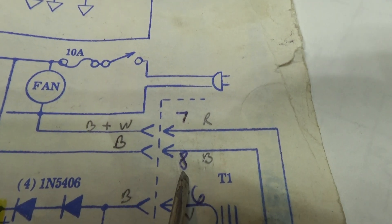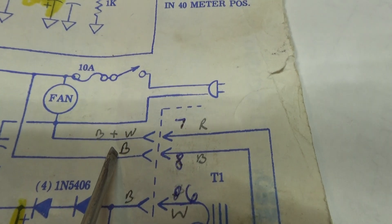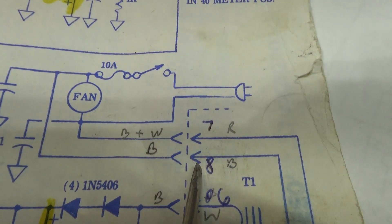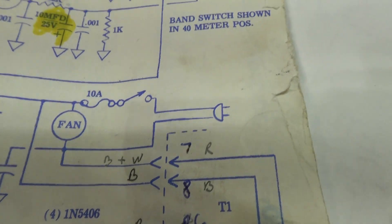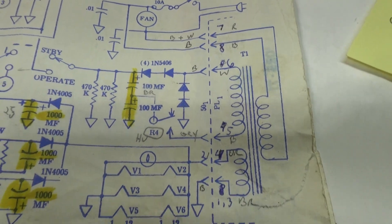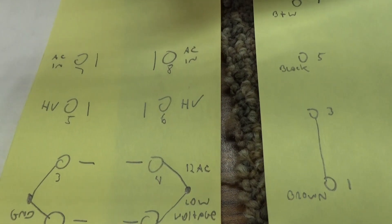And going up to pin six, that's the other leg of the high voltage. And in pin seven or eight is the AC coming in, coming from the chassis going into the external transformer. That's pin seven and eight.